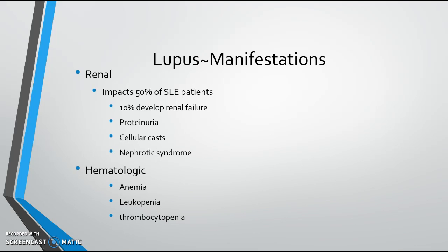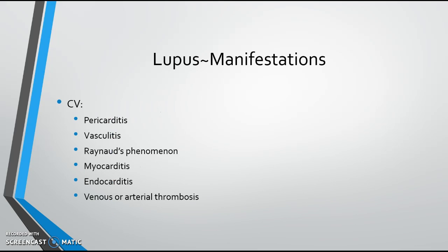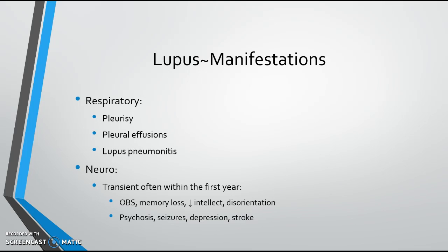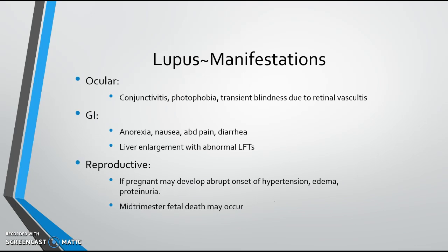Hematologically, there can be a decrease in all three blood cell lines. Respiratory manifestations include pleuritis and pleural effusions. Neurologic changes can range from Organic Brain Syndrome — memory loss, disorientation, decreased intellect — to seizures, psychosis, or stroke. Additional findings include conjunctivitis, vision problems, liver and spleen enlargement. Women of childbearing age may also have difficulty carrying a fetus to term.